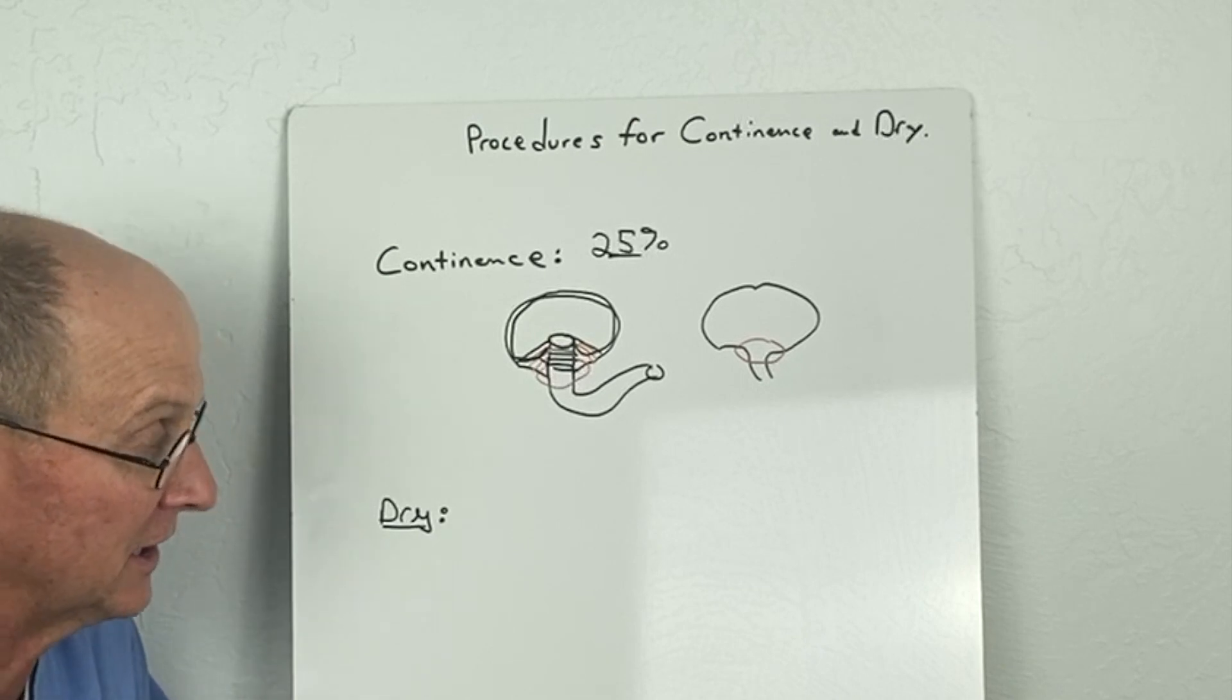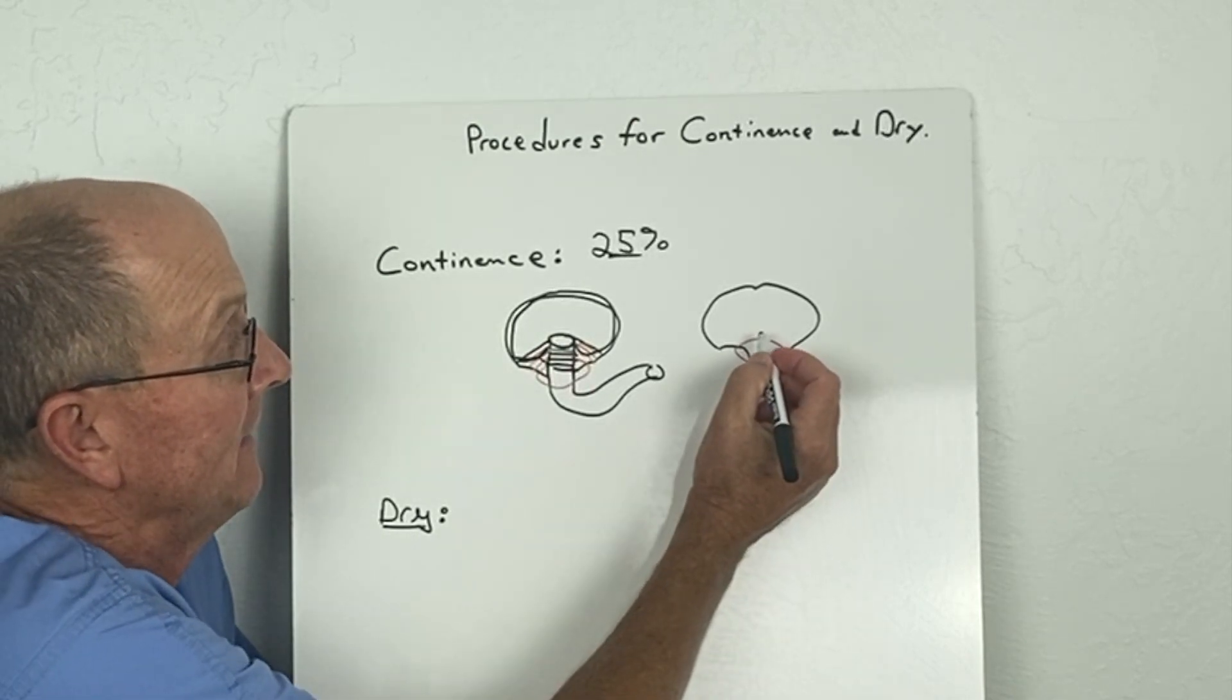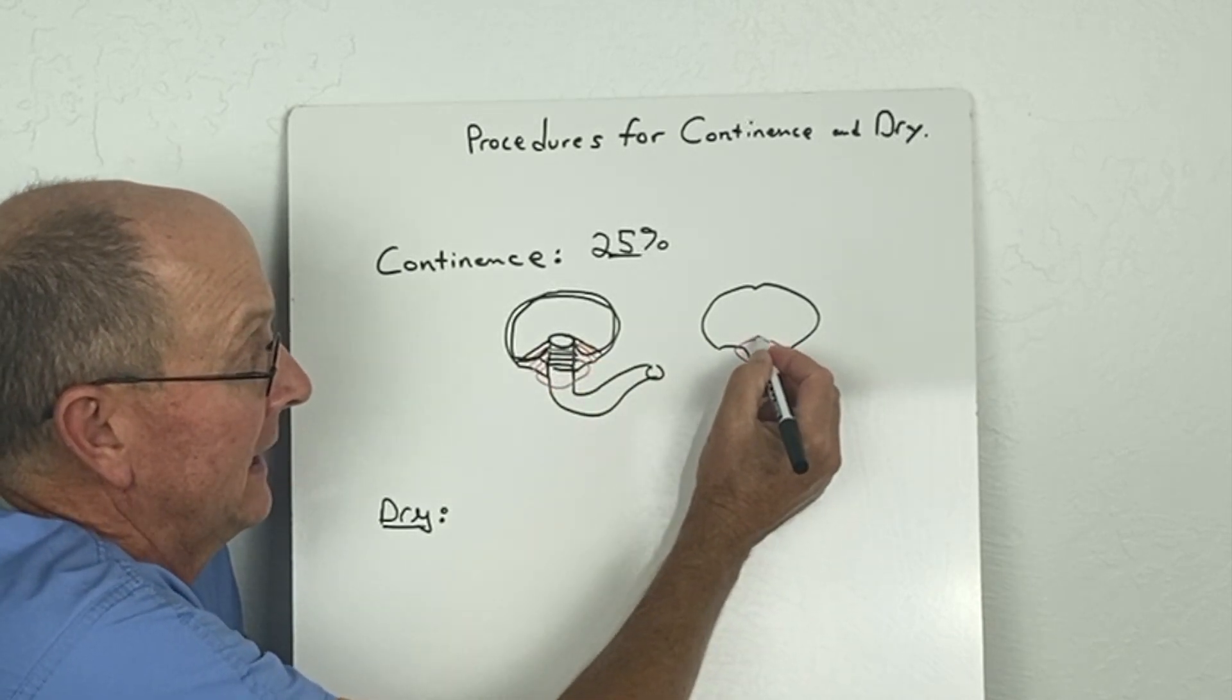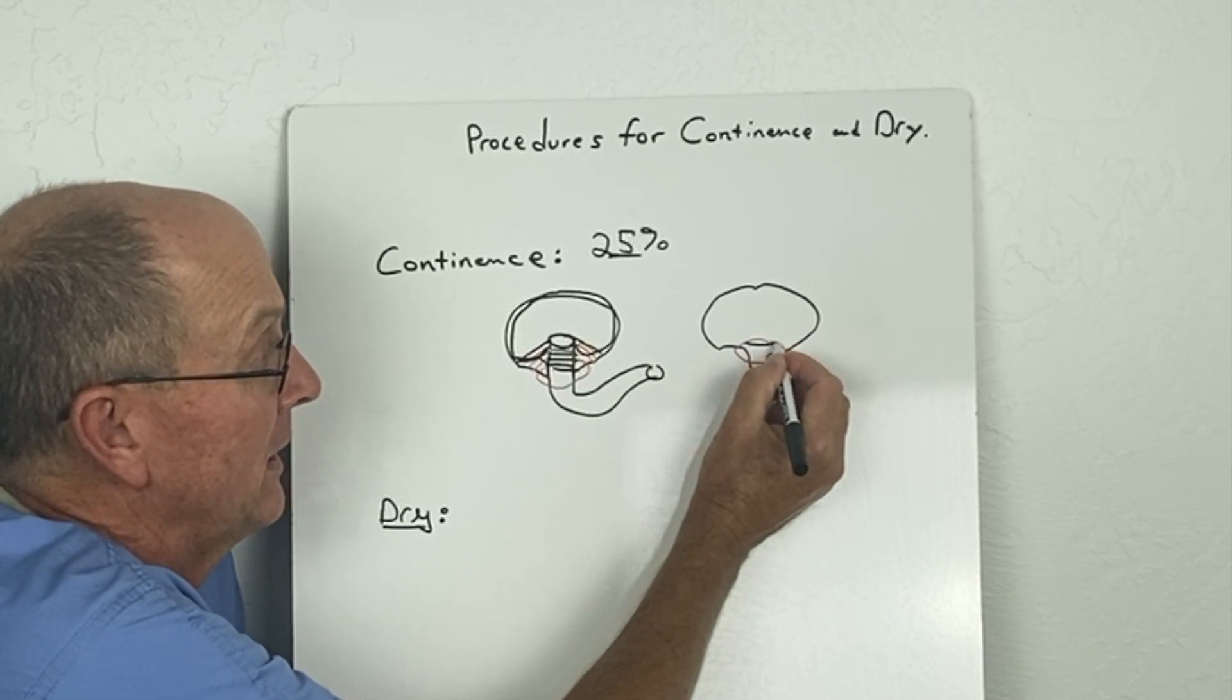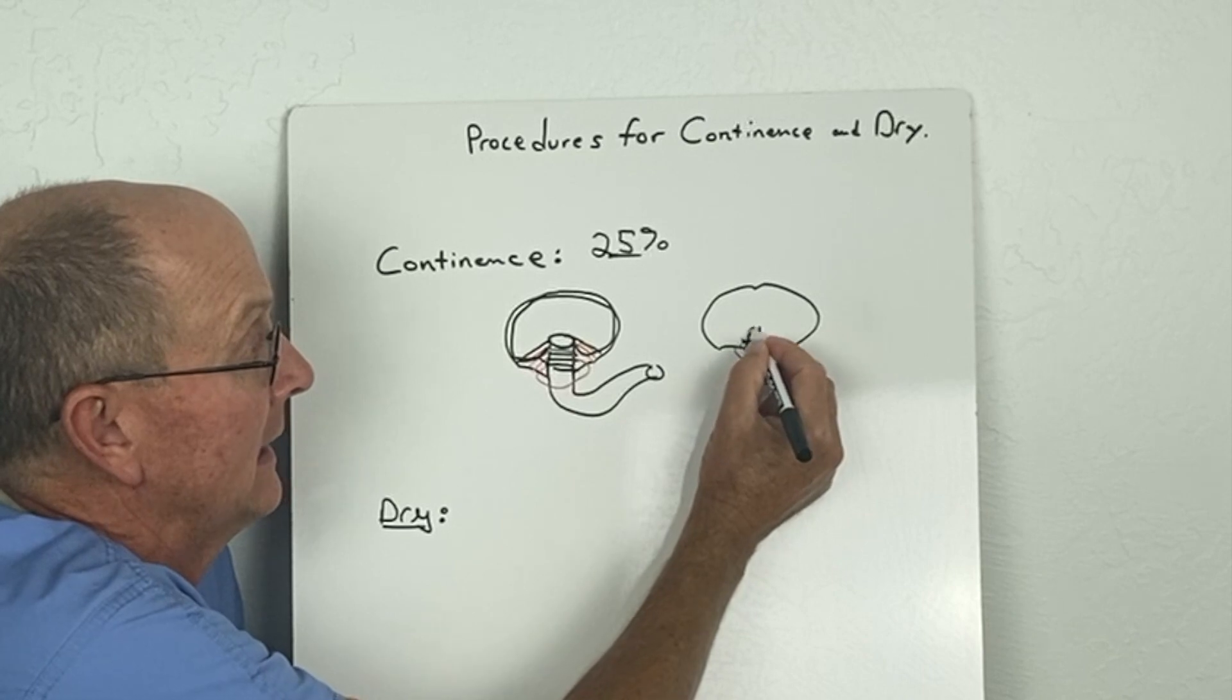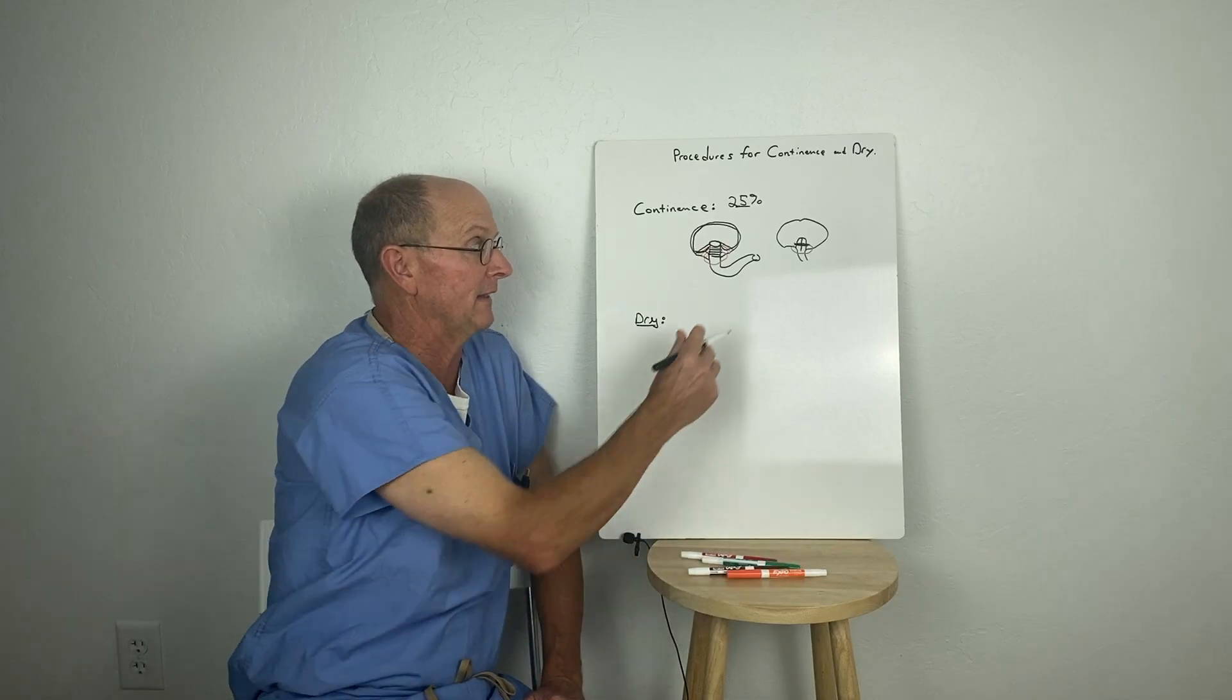This is done mainly after the complete primary closure. You don't use up quite as much bladder. You make a cut that's this way in the bladder and then close it this way, which lengthens the urethra and narrows it. That's the Mitchell bladder neck repair.